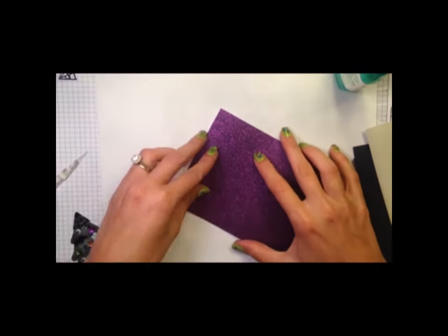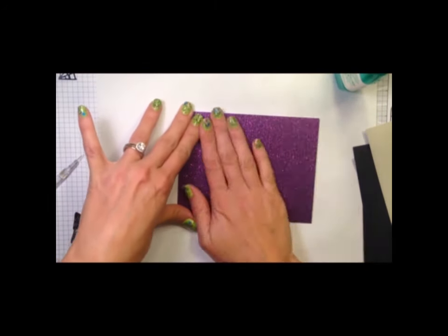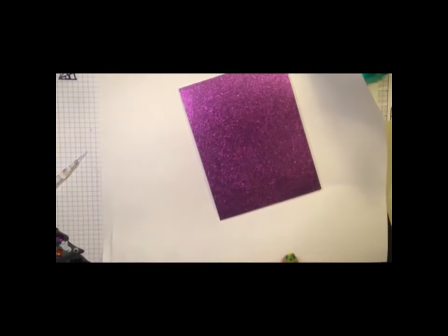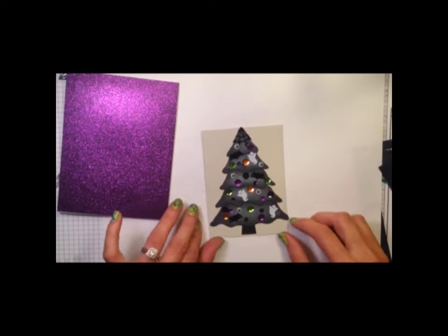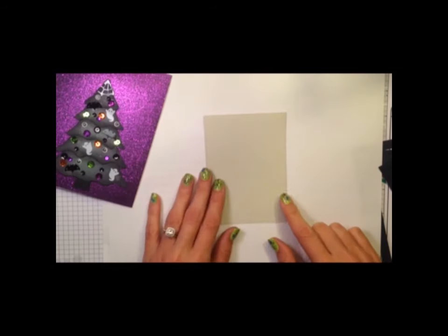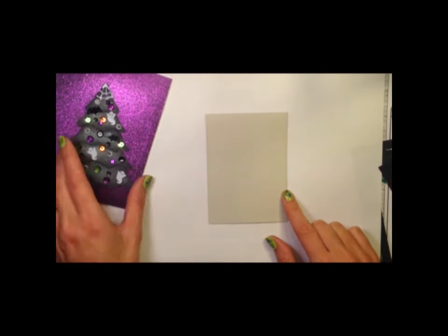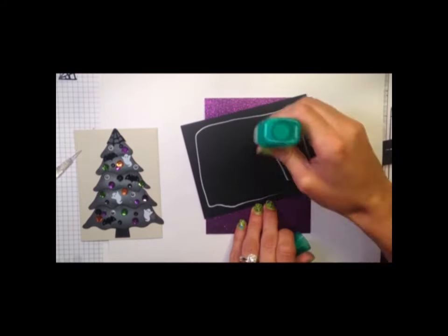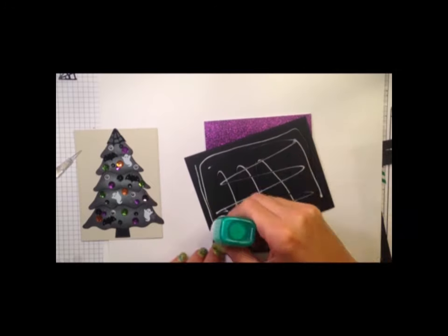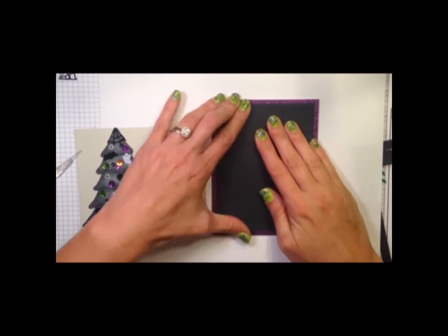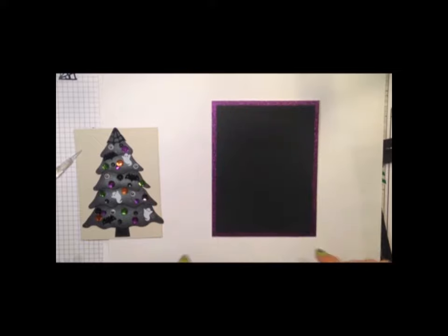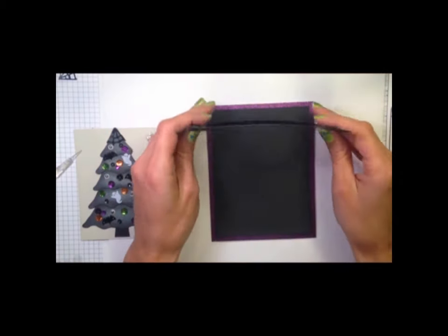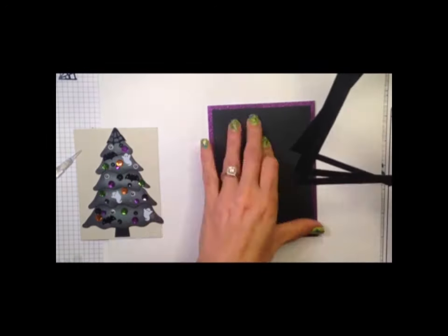This glitter paper is really thick so it's good to use that glue. It just helps it hold better than just my ATG. Now I'm building the frame for my card. I'm adding some foam tape to the frame so the focal point sits back a bit.